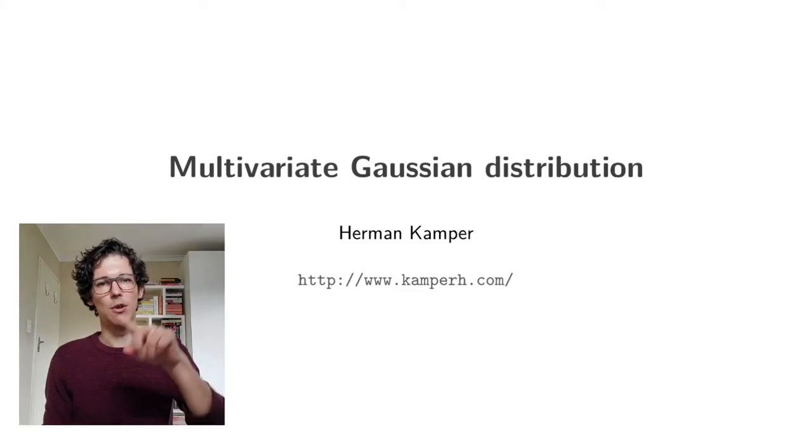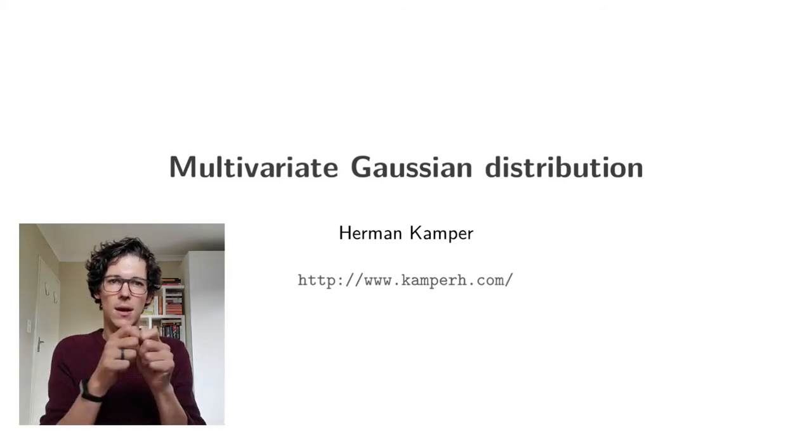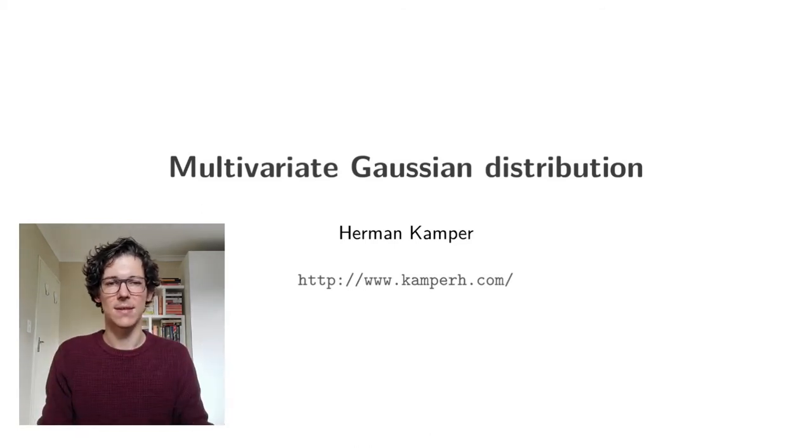In the case of a univariate Gaussian distribution, it's relatively easy to understand what the mean value and the variance tell us about our data and about the density function.